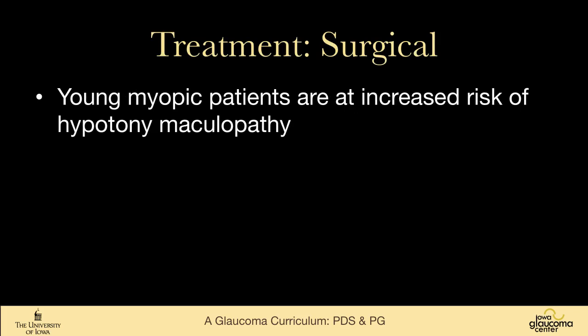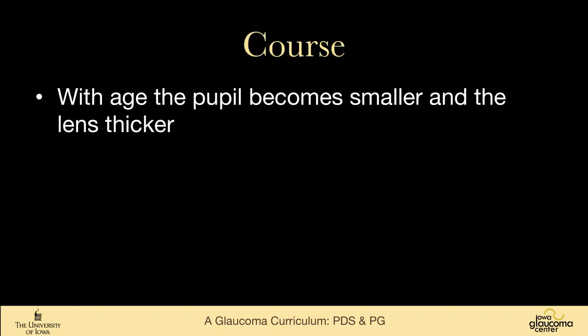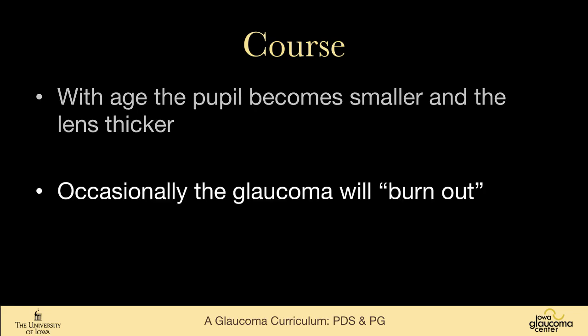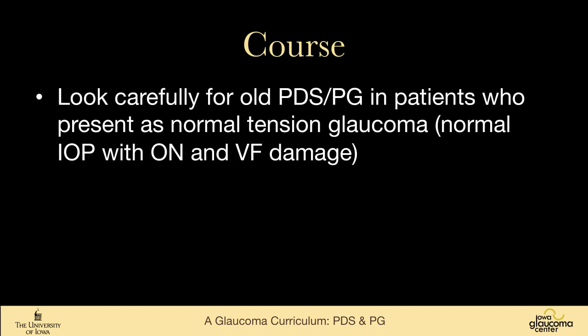Surgical options are the same as for other open-angle glaucomas, but remember these are often young myopic individuals, so one needs to be careful of hypotony maculopathy. Interestingly, with time the pupil becomes smaller and the lens becomes thicker, making back-bowing go away. Occasionally the glaucoma will burn out as the patient stops actively dispersing pigment due to these anatomic changes. You should look for old pigmentary glaucoma in patients who present as normal-tension glaucoma — normal pressures but cupping and field loss — as careful examination may reveal past evidence of pigment dispersion.